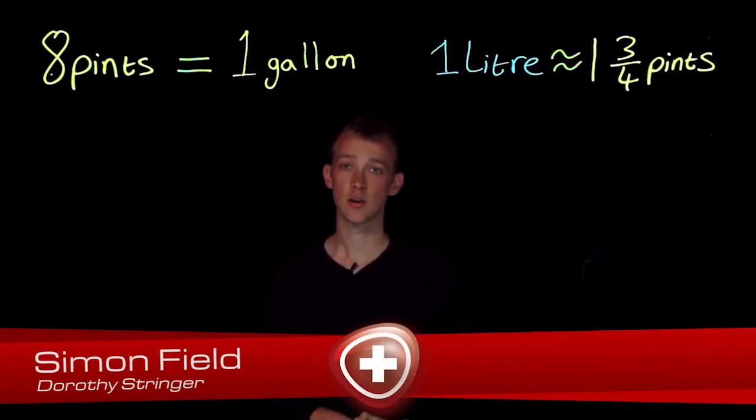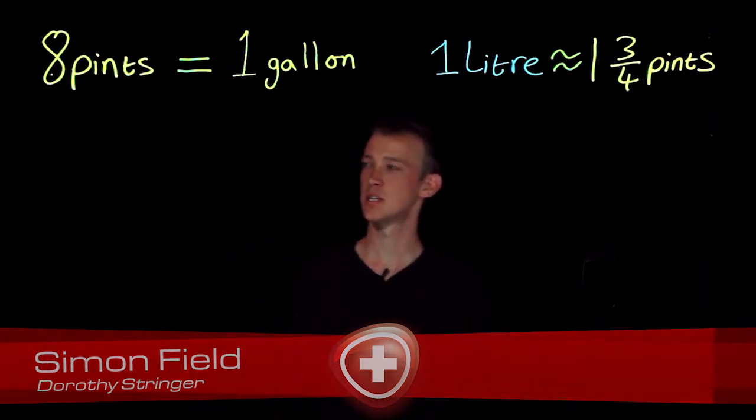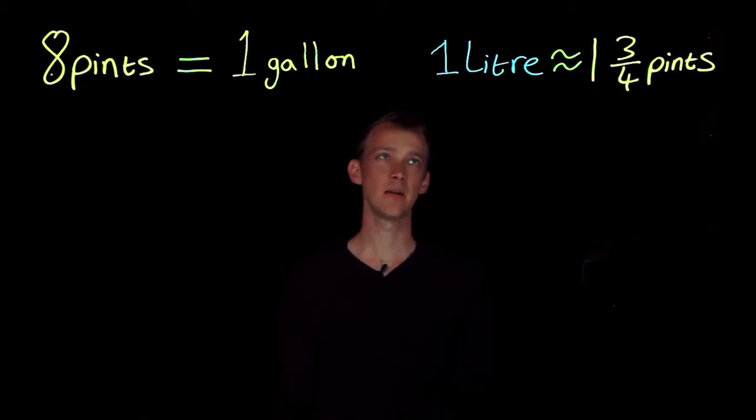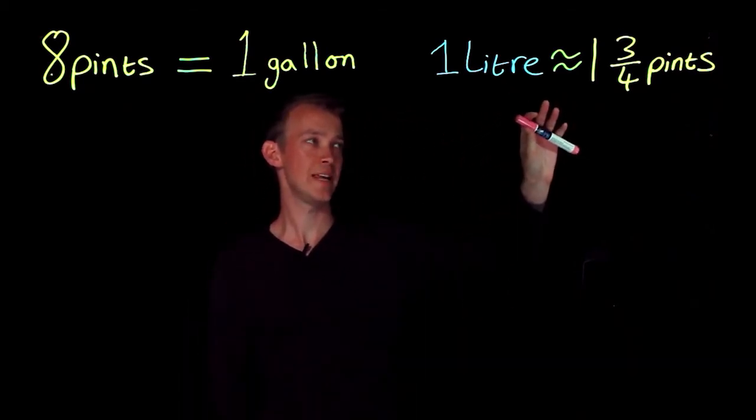In this video we're looking at units of volume. I have here a fact which is in the imperial system: eight pints is equal to one gallon. And over here I have one liter is approximately equal to one and three-quarter pints. One liter is metric and the pints is imperial.